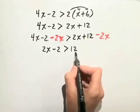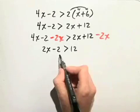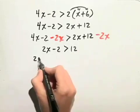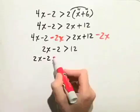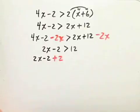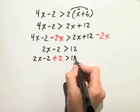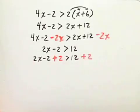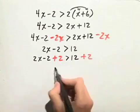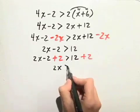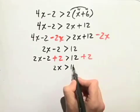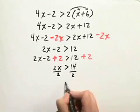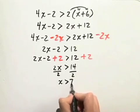Now, we want to put the constants on the right-hand side, so we'll add 2 to both sides. So 2x minus 2 plus 2 is greater than 12 plus 2. So on the left-hand side, we just have 2x is greater than, on the right-hand side, 14. We divide both sides by 2, and we get x is greater than 7.